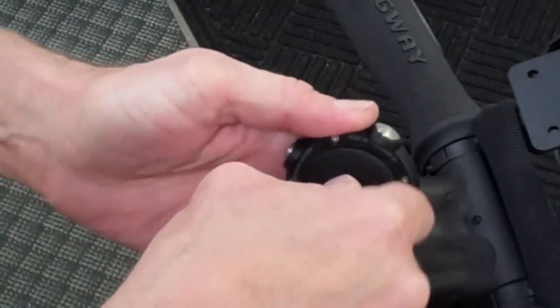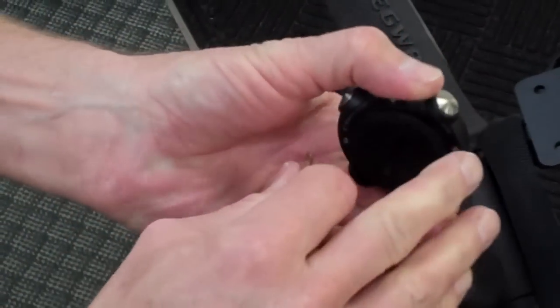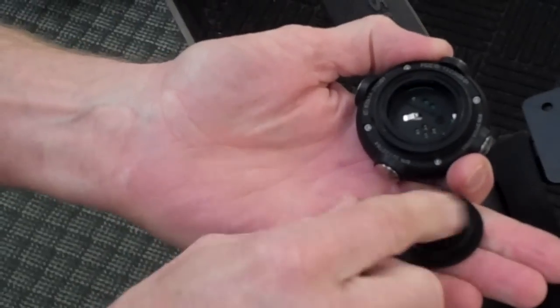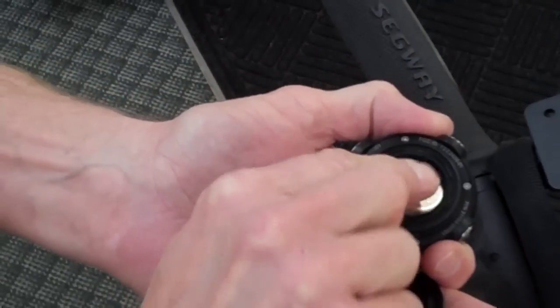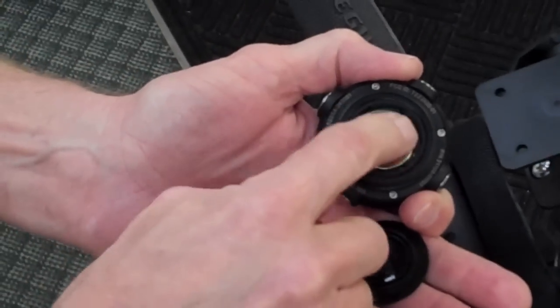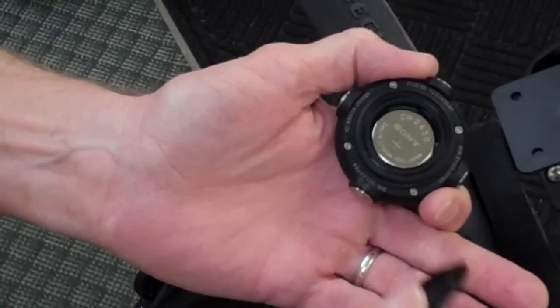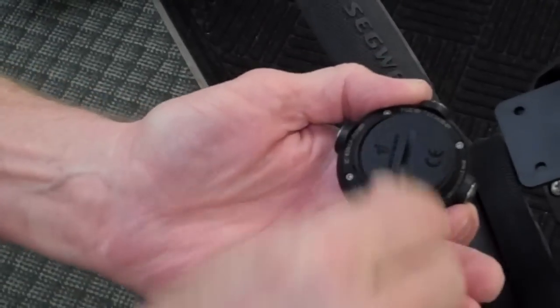Then we're going to take the back off of the key with a coin, take the battery out, replace it with a new battery, and as long as you can read the back of the battery, you've got it in right. Put the back back on.